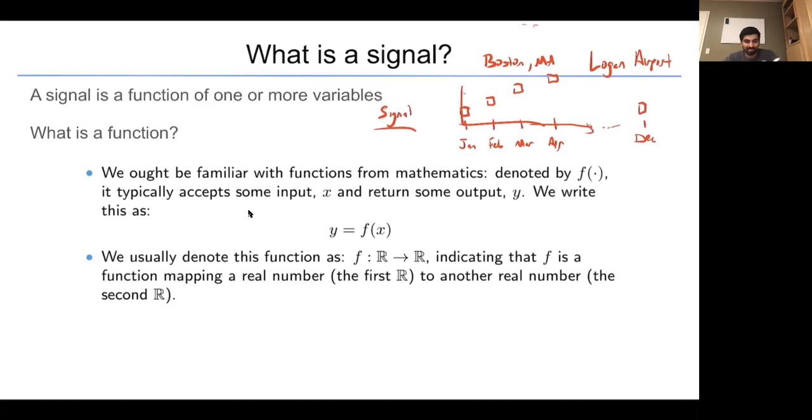In general, a signal is a function. We hopefully are familiar with functions from math, but basically it's something that accepts an input x and returns an output y. Usually this functional mapping is from the field of real numbers to the field of real numbers. So this maps from one real number like three or four or five to another real number like six, seven, eight.